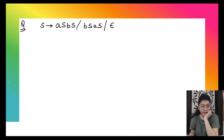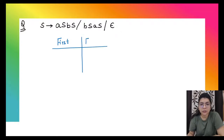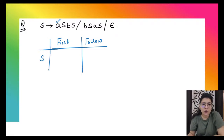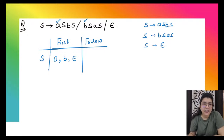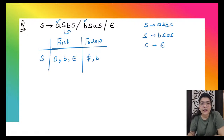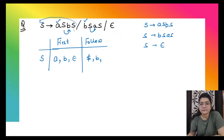We have only one variable S. FIRST of S: the productions are S derives a S b S, S derives b S a S, and S derives null. So FIRST of S is 'a', 'b', and epsilon. FOLLOW of S: dollar always comes first. S is followed by 'b' in the first production and by 'a' in the second production. So FOLLOW of S is dollar, 'b', and 'a'.